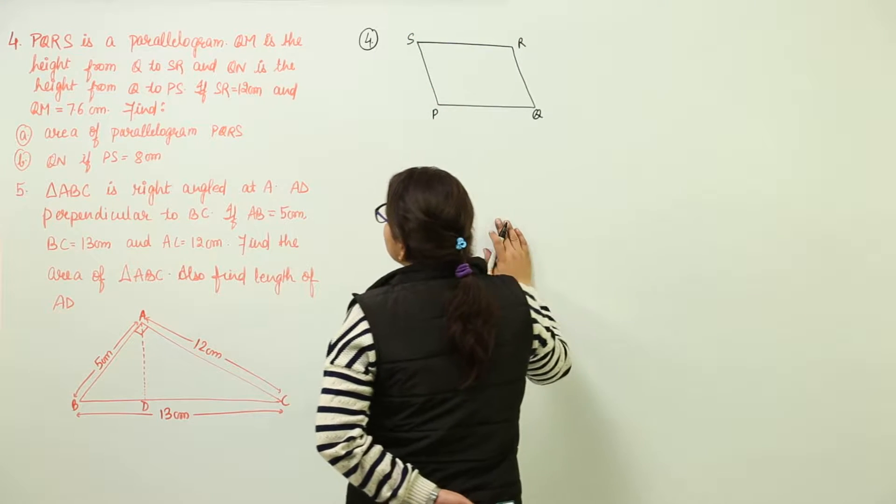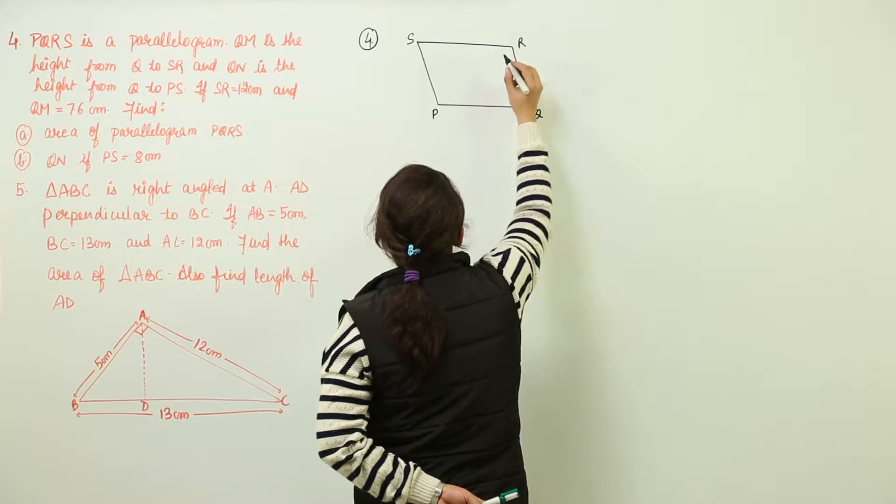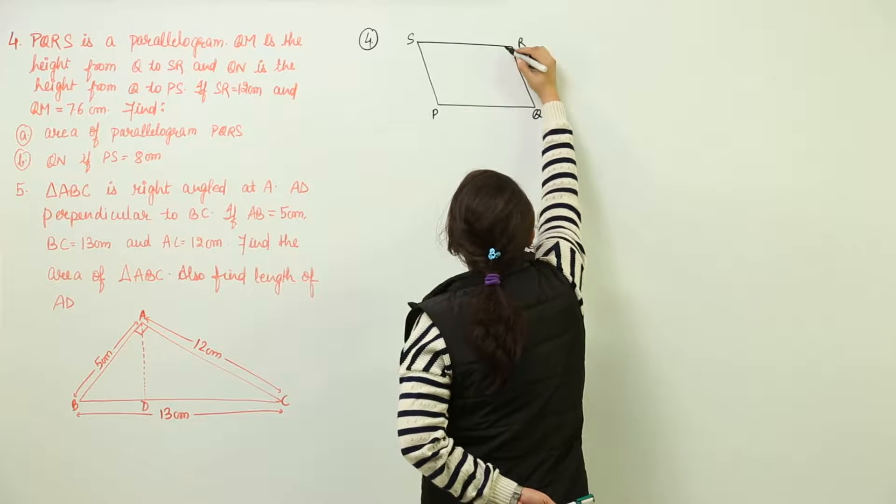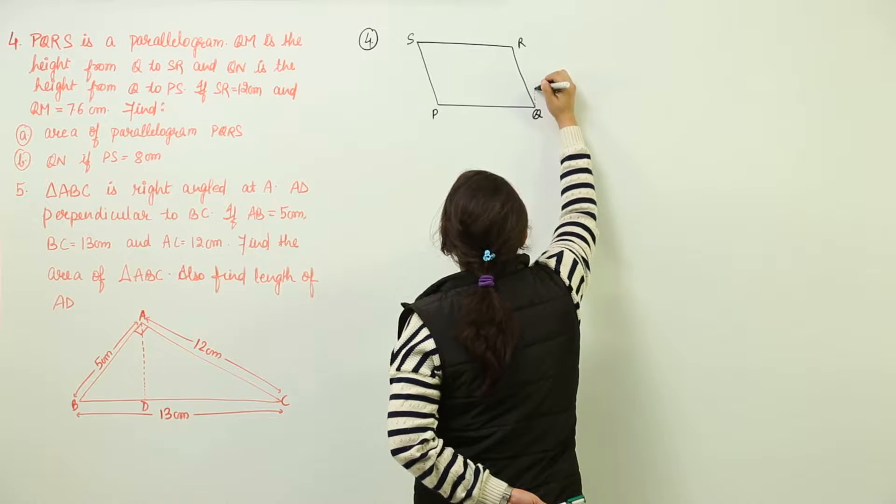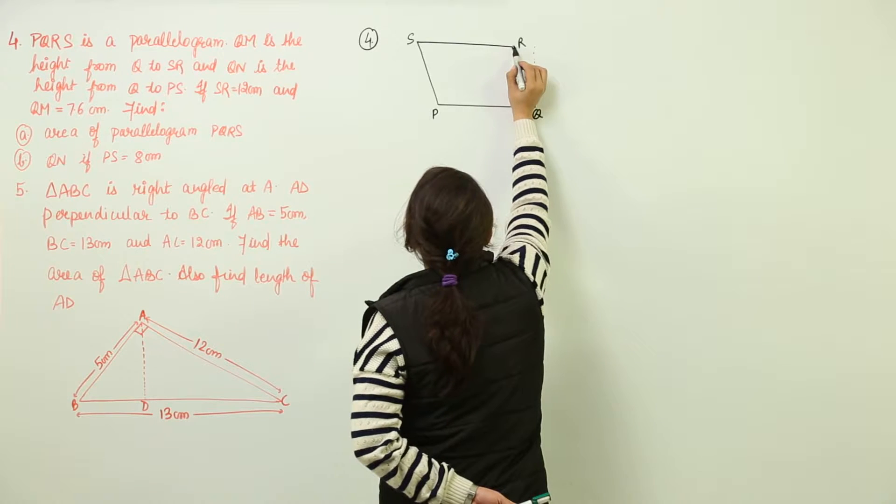We have the QM as height from Q to SR. Q to SR, we are going to draw a height that will be equal to like this. That is the perpendicular.